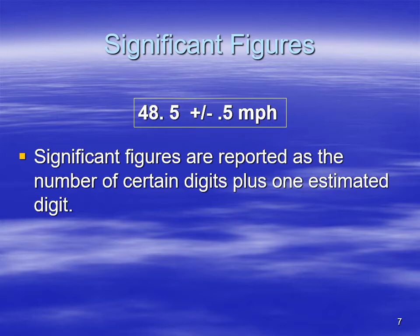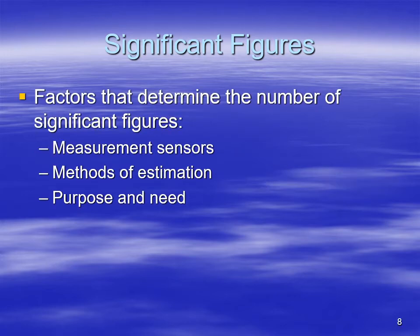Significant figures are reported as the number of certain digits plus one estimated digit. The things that determine the number of significant figures are the sensors and how they measure things, what the manufacturer states the uncertainty is, or if you're doing the estimate, how you are estimating it. And also, what do you need these numbers for — how close do you have to be, how accurate do you have to be?